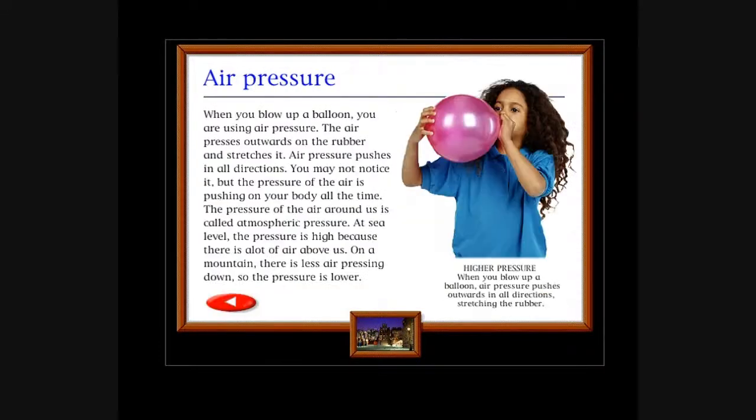Water pressure also makes things float. This is because the pressure pushing upwards on the bottom of objects supports their weight. Holes in this bottle let water out under pressure. The pressure increases with depth. Water trickles out where pressure is low. Water squirts out quickly where pressure is high. Air pressure: When you blow up a balloon, you are using air pressure. The air presses outwards on the rubber and stretches it.